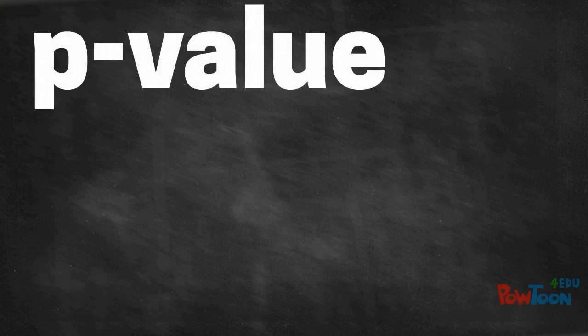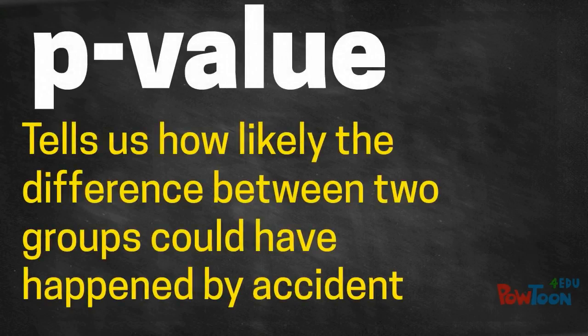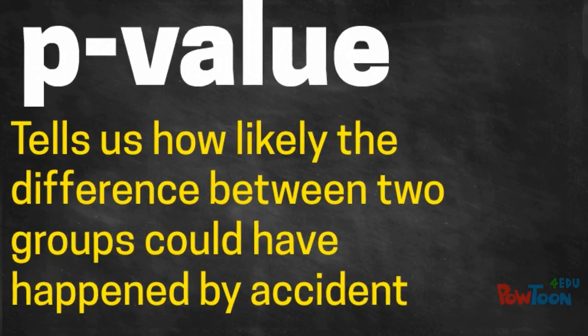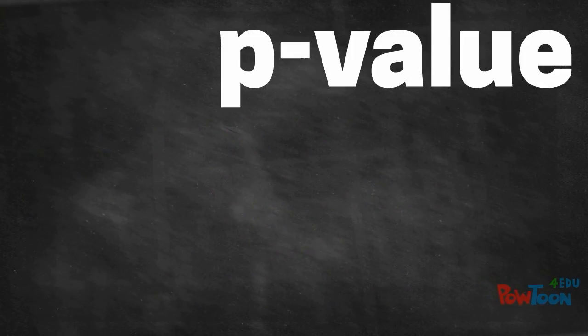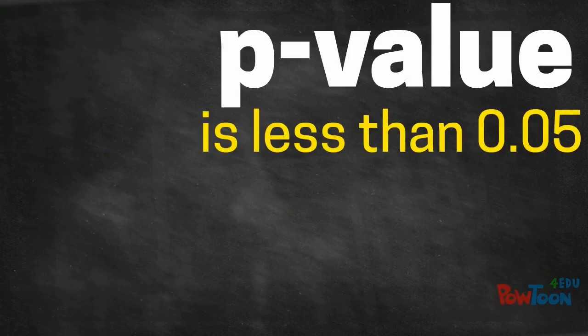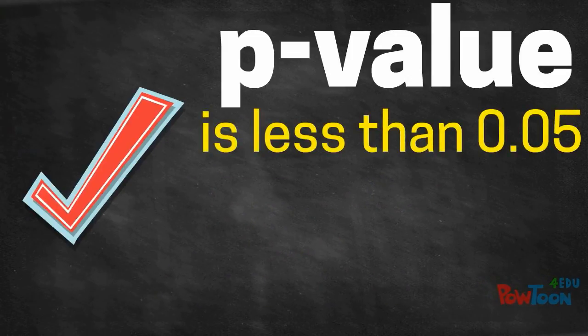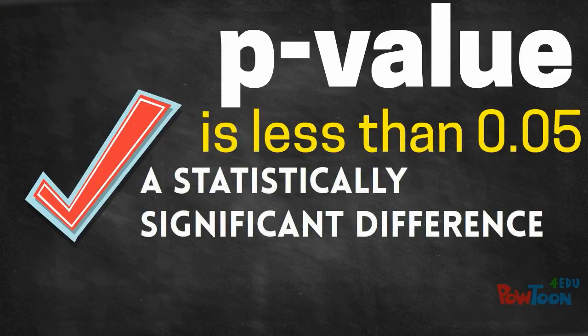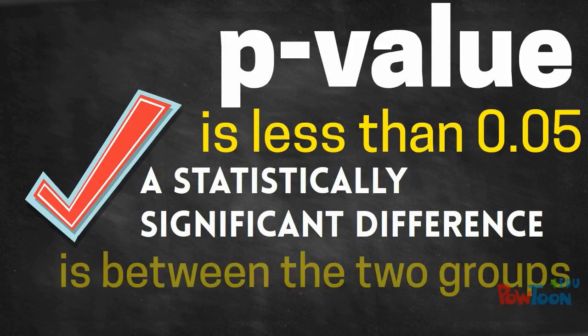The value resulting from a t-test is called the p-value. The value tells us how likely the difference between the two groups could have happened by accident. If the p-value is less than 0.05, then there is a statistically significant difference between the two groups.